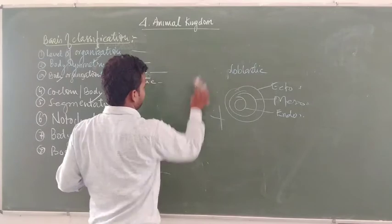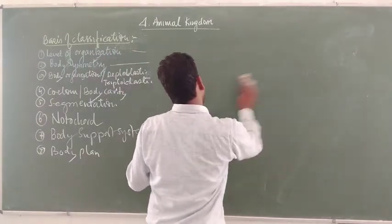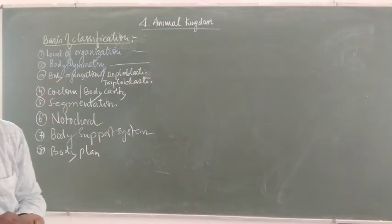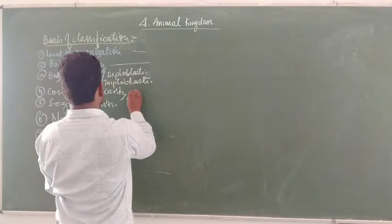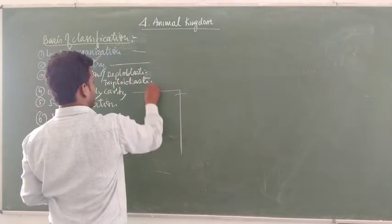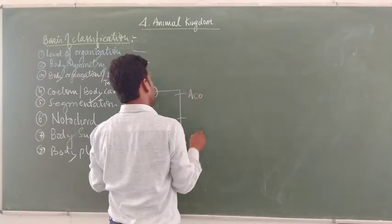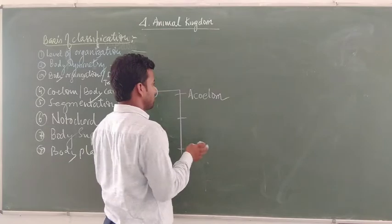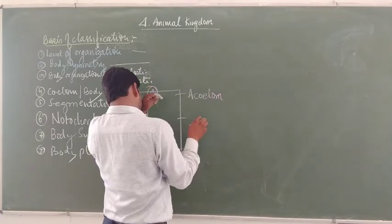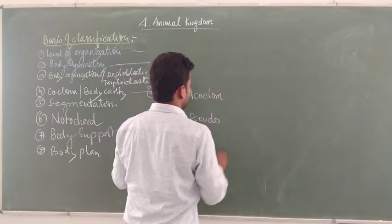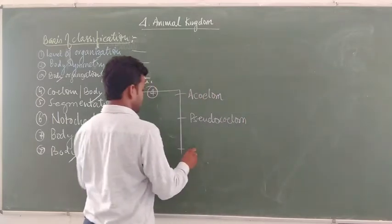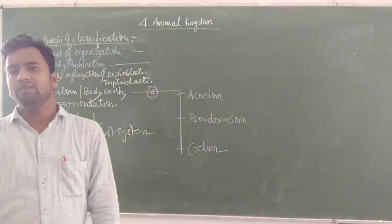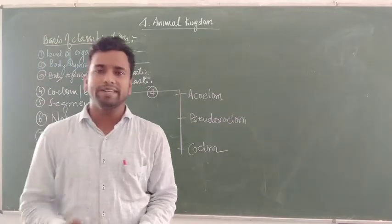Now let us discuss the coelom. Coelom is present inside animal bodies. There are three types: if the animal does not have a coelom, it is called acoelomate. If the animal shows a pseudocoelom, it is called pseudocoelomate. And if a well-defined coelom is present in the body, it is called coelomate. What is the need of coelom in the body? The coelom is present between the mesoderm layers and is the most important body cavity.